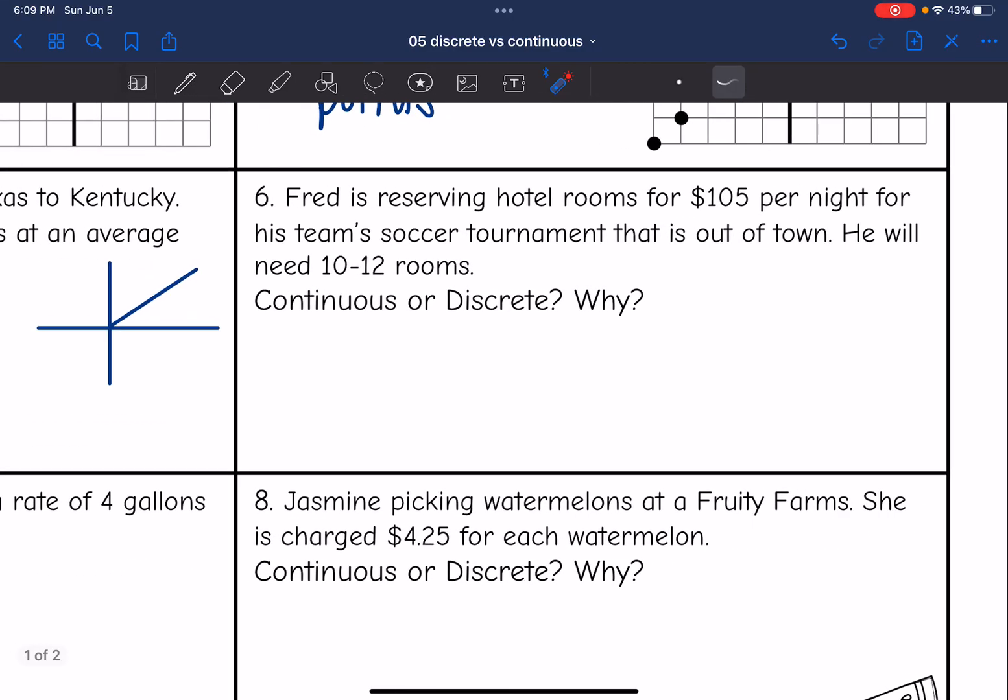Okay, then number six says Fred is reserving hotel rooms for $105 per night for his soccer team's tournament that is out of town. He will need 10 to 12 rooms. Is this continuous or discrete and why? So let's think about this. He needs between 10 and 12 rooms. Is that going to be 10 and then like 10.05 rooms and then 10.2 rooms? Or is it going to be 10, 11, or 12 rooms?